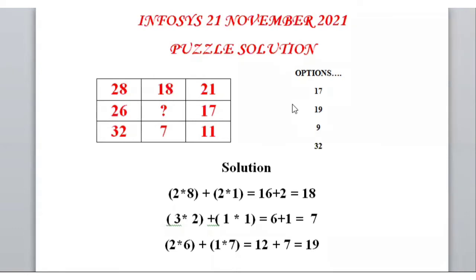at 10 AM. So let's discuss the solution. Friends, here is the puzzle. Let's read the puzzle row-wise. In the first row, the elements are 28, 18, 21. Then in the second row, elements are 26, question mark, 17. And in the last row, the third row, elements are 32, 7, and 11.